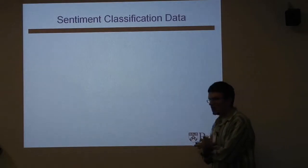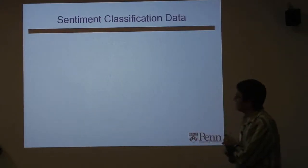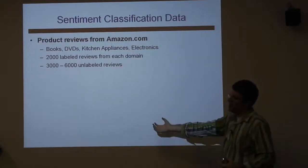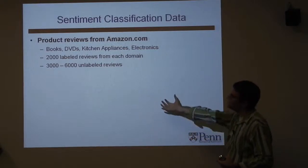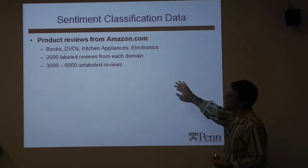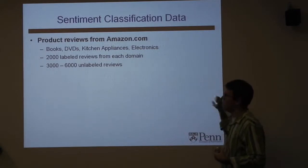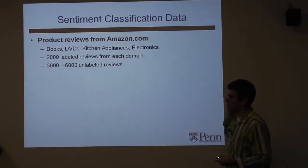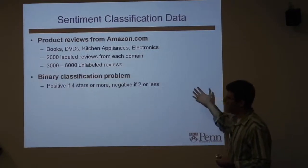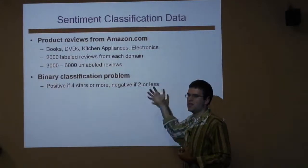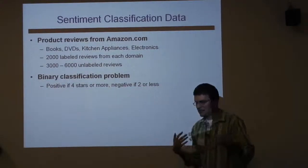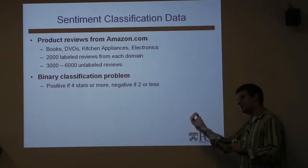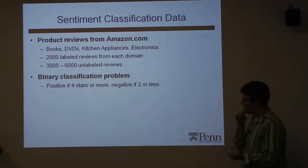For sentiment classification, all data is from Amazon. We crawled the site and pulled down reviews from four domains: books, DVDs, kitchen appliances, and electronics. We had 2,000 labeled reviews from each and between 3,000 and 6,000 unlabeled. We treat this as a binary classification problem: reviews with four or five stars are positive, one or two stars are negative. Features are unigrams and bigrams, which is pretty standard for this task.